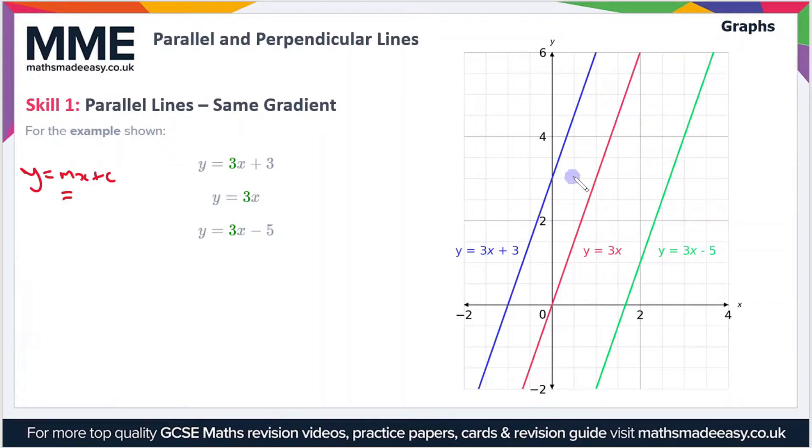Here we have the lines y equals 3x plus 3 in blue, we have the line y equals 3x, and y equals 3x minus 5 in green. As you can see, they all have the same gradient of 3. That means for every one square the line goes across, it goes 3 upwards, and the lines are parallel.